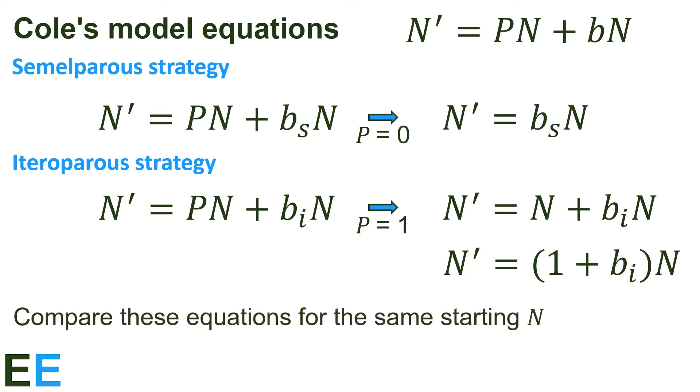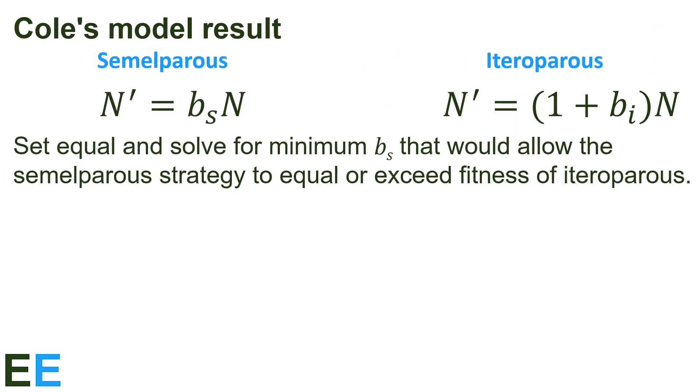To compare our strategies, we compare these equations for the same starting n value. Now for the result of Cole's model. Our equations for the semelparous and iteroparous strategies are shown here. Now we set them equal to each other and solve for the minimum B sub s value that would allow the semelparous strategy to equal or exceed the fitness of the iteroparous strategy. Plugging in our two equations gives us this equality. Canceling the n on both sides gives us this final result for the birth rate of the semelparous individuals that would give them equal population growth and fitness to the iteroparous ones.